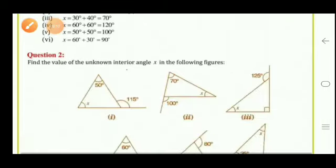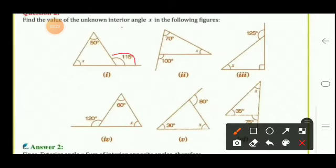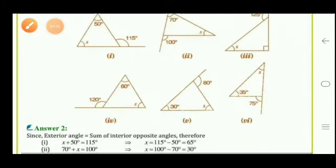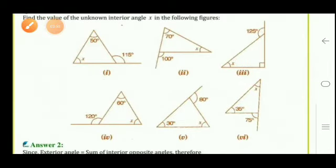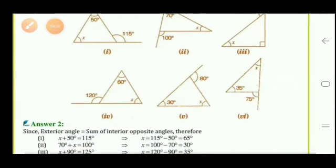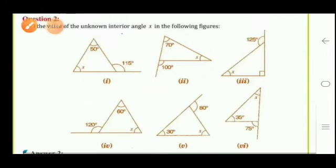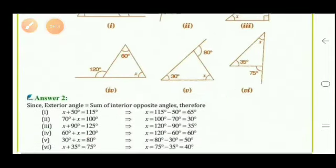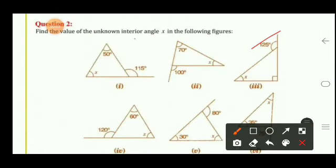Question 2: find the value of unknown interior angle x. Using the exterior angle property of a triangle: Part 1 — x + 50 = 115, so x = 65°. Part 2 — one interior angle is 100°, the other is 70°, so 70 + x = 100, giving x = 30°. Part 3 — one angle is 125°, the other interior angle is 90°, so x + 90 = 125, giving x = 35°.